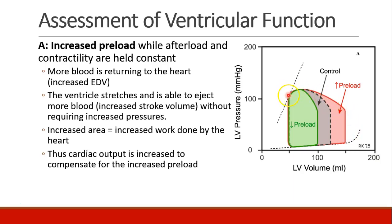Since the systolic side of the curve doesn't change, the heart still ejects to the same end systolic volume — we're still limited by that curve. What we actually have is a wider curve with a larger area inside, meaning the heart is doing more work. Cardiac output has increased to compensate for increased preload without changing contractility. This is the Frank-Starling mechanism: as ventricular filling increases, we eject more blood at the same pressure and get increased cardiac output. The same is true in reverse — decreased preload means less filling, less ejection, and decreased cardiac output.